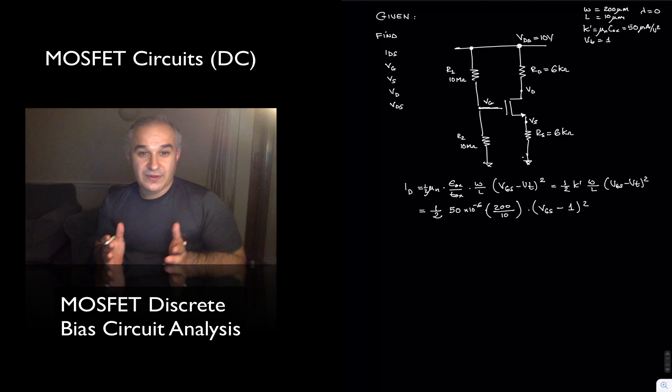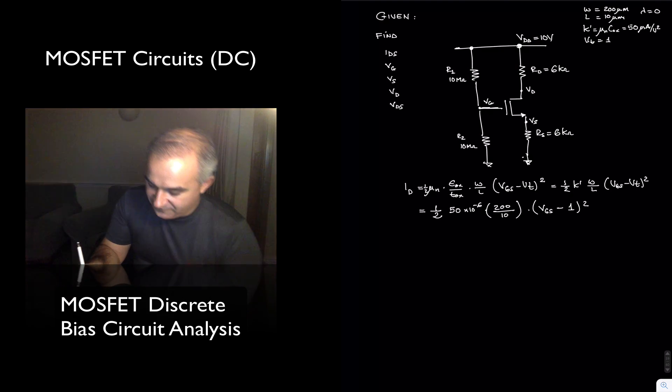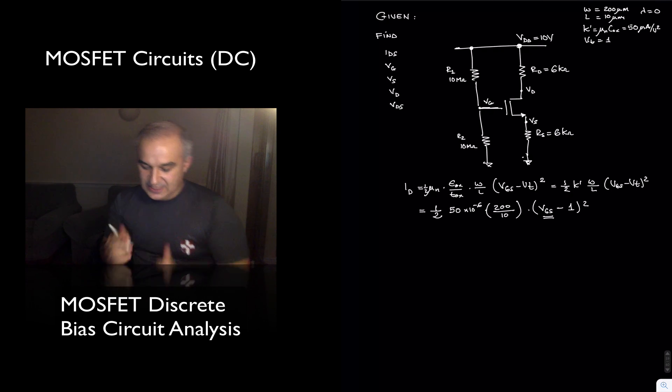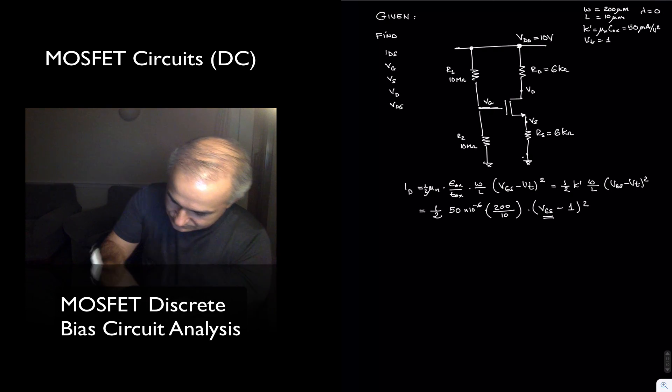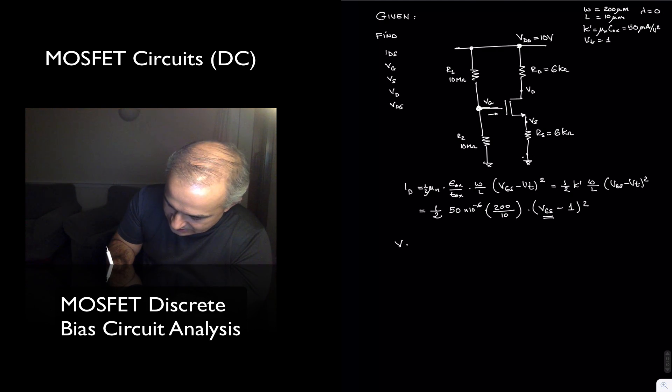If we knew the current at the drain, we would be able to find everything. But for that, we need to know the voltage at the gate and the voltage at the source. Let's start with the voltage at the gate. The MOSFET draws no current at the gate, so this is a voltage divider.